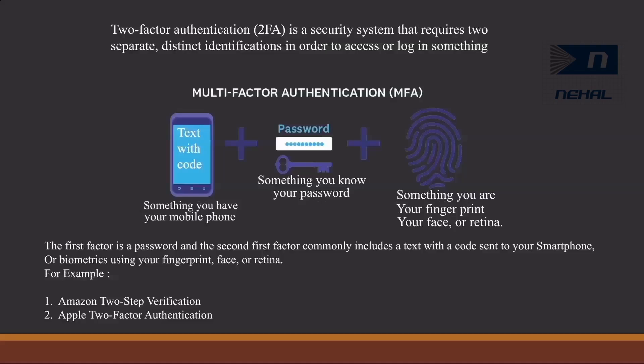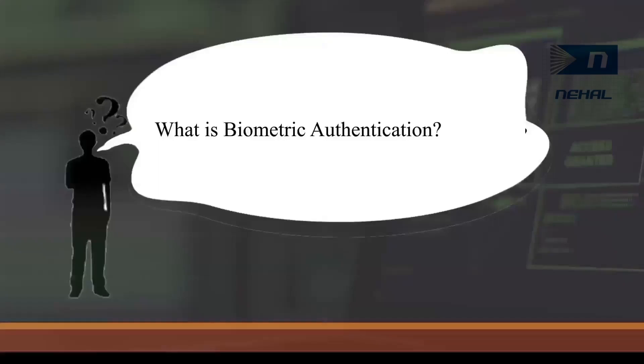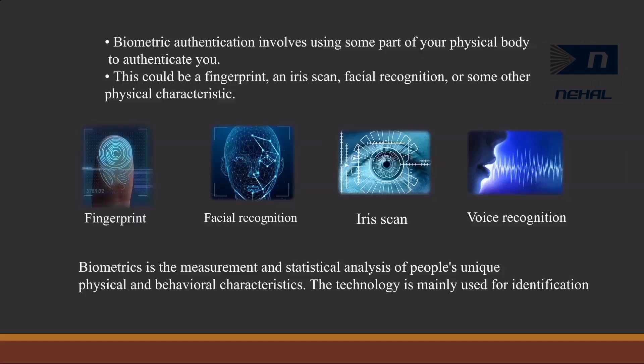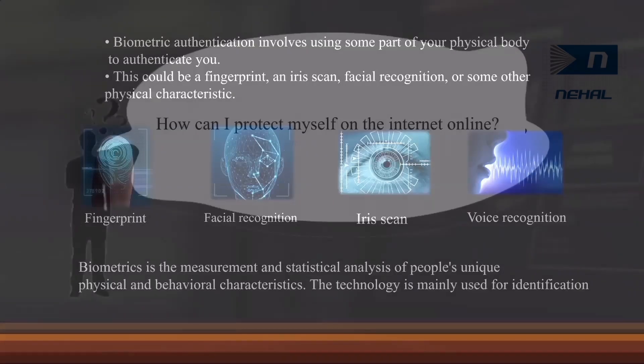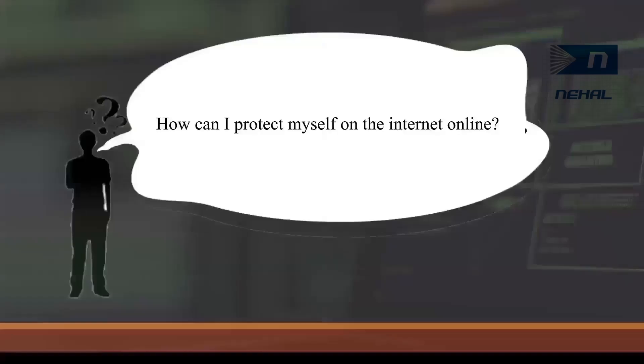For example, Amazon has two-step verification and Apple has two-factor authentication. What is biometric authentication? Biometric authentication involves using some part of your physical body to authenticate you. This could be a fingerprint, facial recognition, iris scan, voice recognition or some other physical characteristics. Biometrics is the measurement and statistical analysis of people's unique physical and behavioral characteristics, mainly used for identification.